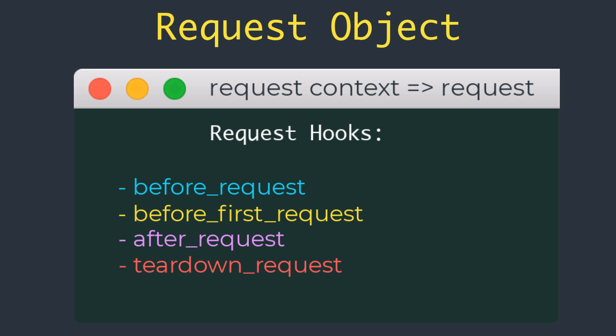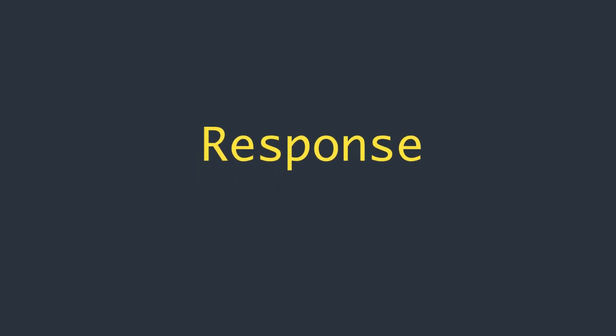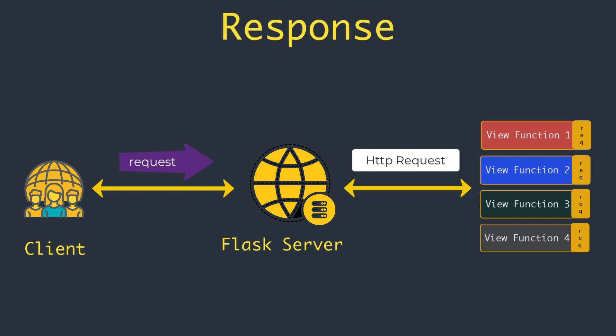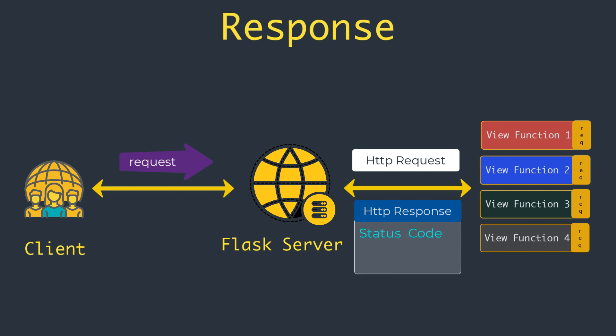Now let's talk about the response. When Flask invokes a view function, it expects its return value to be the response to the request — mostly a simple string in the form of an HTML page. But the HTTP protocol requires more than a string. A very important part of the HTTP response is the status code, which Flask by default sets to 200, indicating the request was carried out successfully. When a view function needs to respond with a different status code, it can add the numeric code as a second return value after the response text.